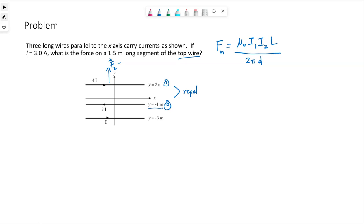So force on top wire by wire 2. That's supposed to be a circle around the 2. We can calculate this. Our top equation, we know mu-naught is 4 pi.